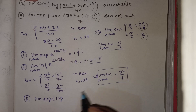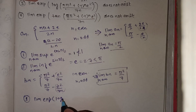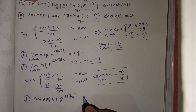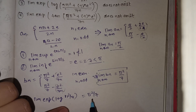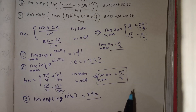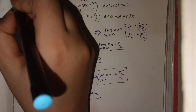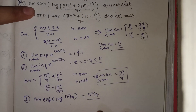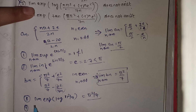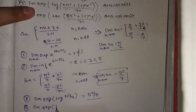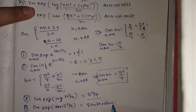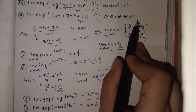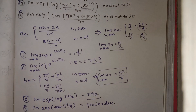For option 3, we evaluate the limit of e^(log(b_n)) = e^(log(π²/7)) = π²/7, since exponential and log cancel. This limit exists, but option 3 says it does not exist — so option 3 is false. Similarly for option 4, the limit of e^(tan(π²/7)) gives a finite value, but option 4 claims it does not exist — so option 4 is also false.